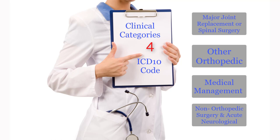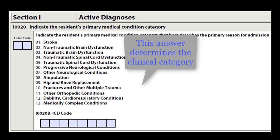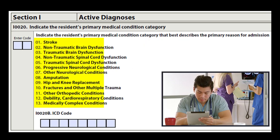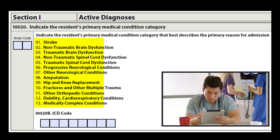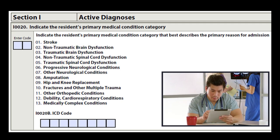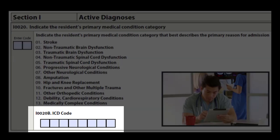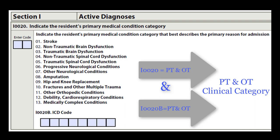It's very important that a thorough chart review is completed to ensure you do not miss any of the surgeries that may have occurred while the resident was in the hospital. In section I-0020, you're going to be selecting the resident's primary medical condition category, and this is going to be based on the primary reason for admission — why did that resident come to your facility and require skilled care? That ICD-10 code is going to be placed in I-0020B.